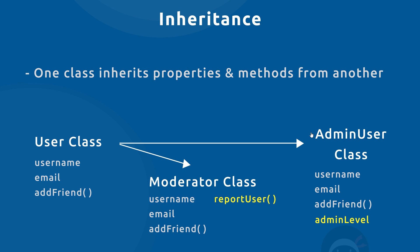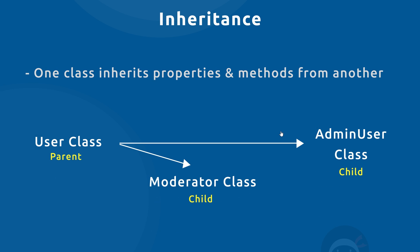More than one class can inherit from another. For example, we could also have a third class called moderator which also inherits from the user class, giving it the same properties and methods — username, email, and add friend — but also an additional method called report user. Any object created with this class would have all those properties plus report user. This is called a parent class having multiple sub-classes or child classes.